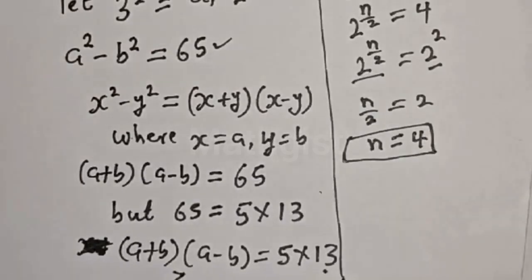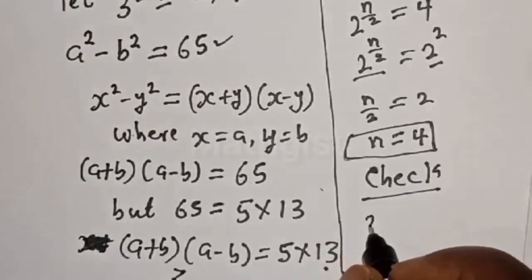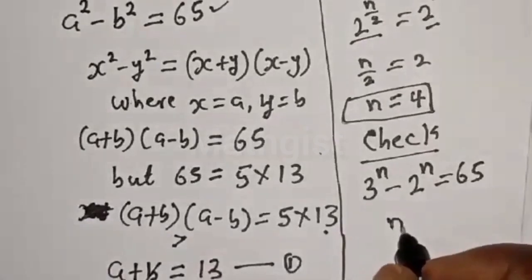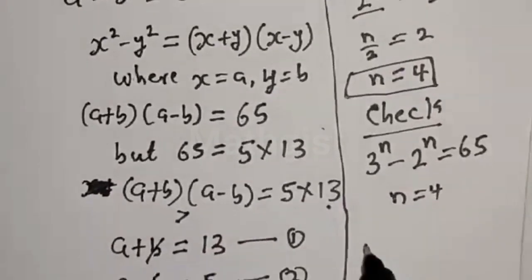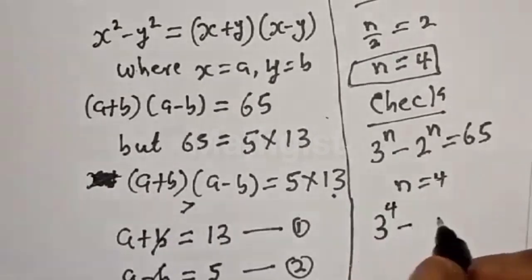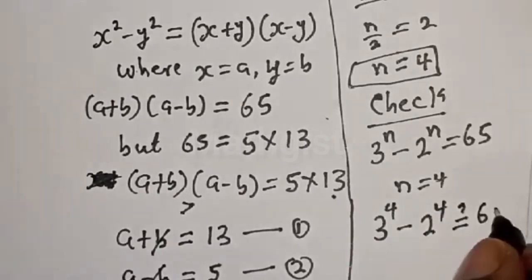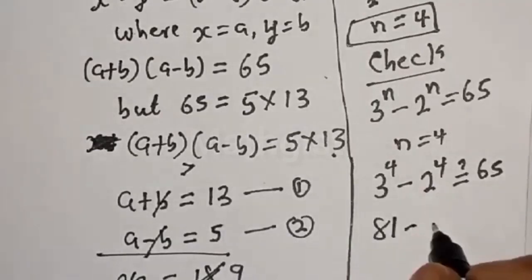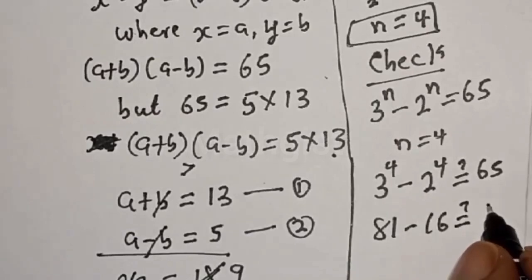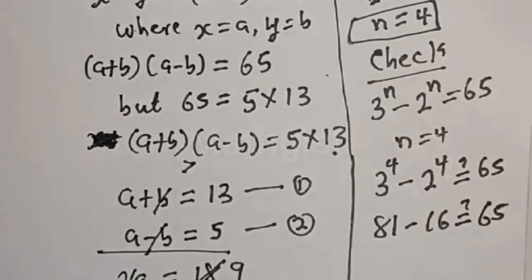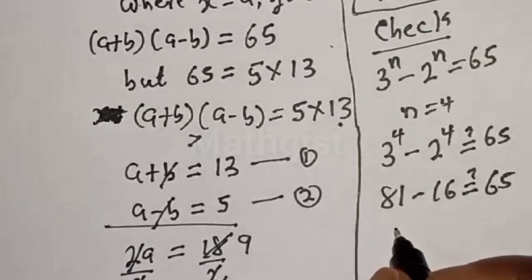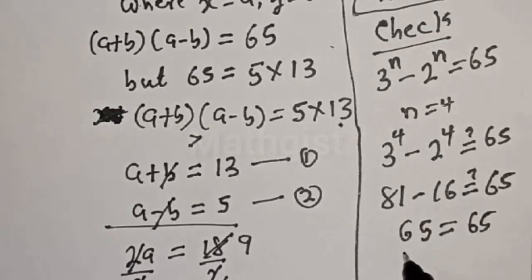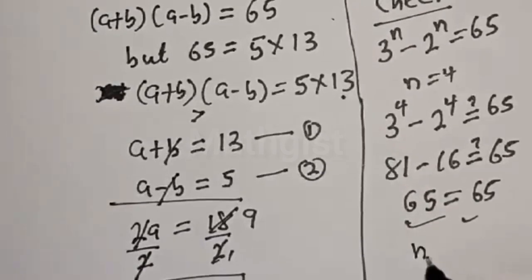Let's confirm: with n = 4, we compute 3^4 - 2^4 = 81 - 16 = 65, which equals 65. We satisfy the original equation, so n = 4 is verified.